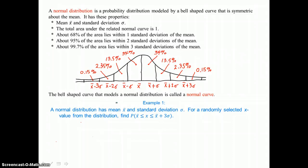In example 1, a normal distribution has mean X bar and standard deviation sigma. For a randomly selected X value from the distribution, find the probability that X is between the mean and the mean plus 3 standard deviations.